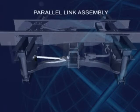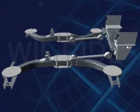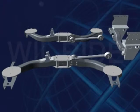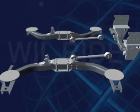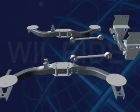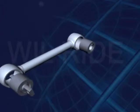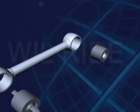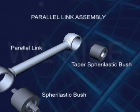Two bottom links, also called as parallel links. Controls the movement of axle with respect to the chassis. Parallel link assembly may consist of parallel link, heavy duty spherical elastic bush assembly, and taper spherical elastic bush assembly.